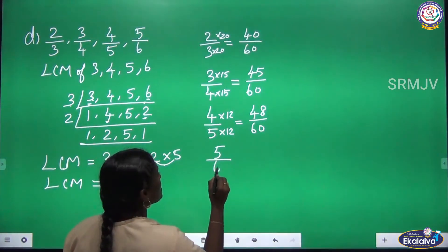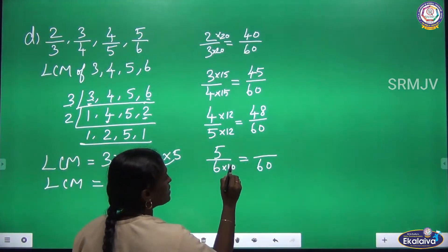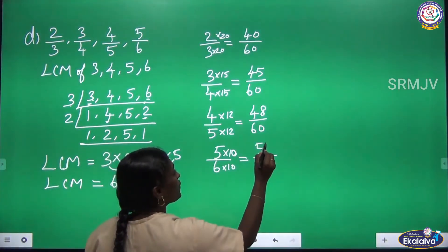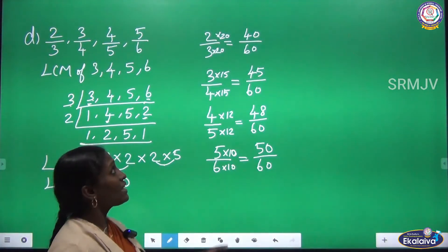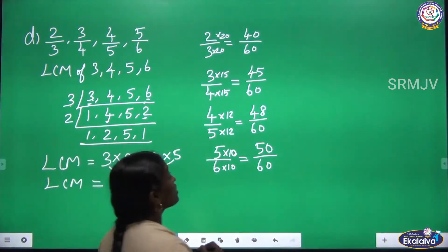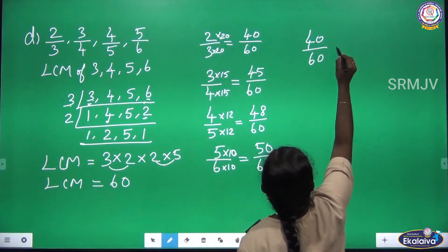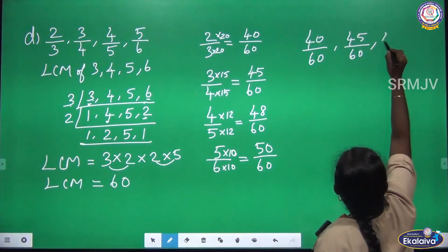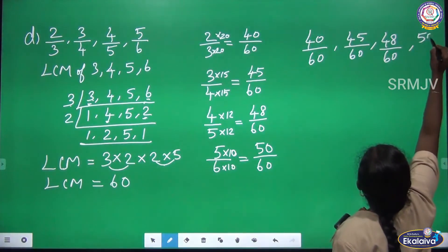The fourth fraction is 5 by 6. In the 6 table, 6 × 10 = 60, so we multiply the numerator by 10. 5 × 10 = 50. Now we have all fractions with the same denominator 60: 40 by 60, 45 by 60, 48 by 60, and 50 by 60.